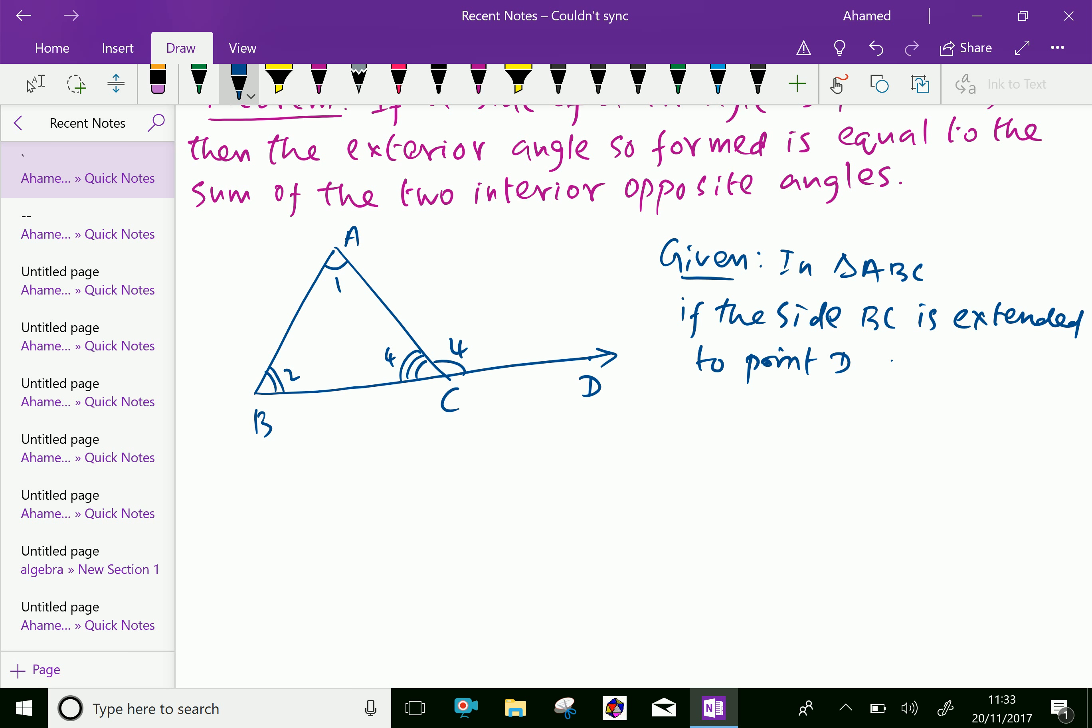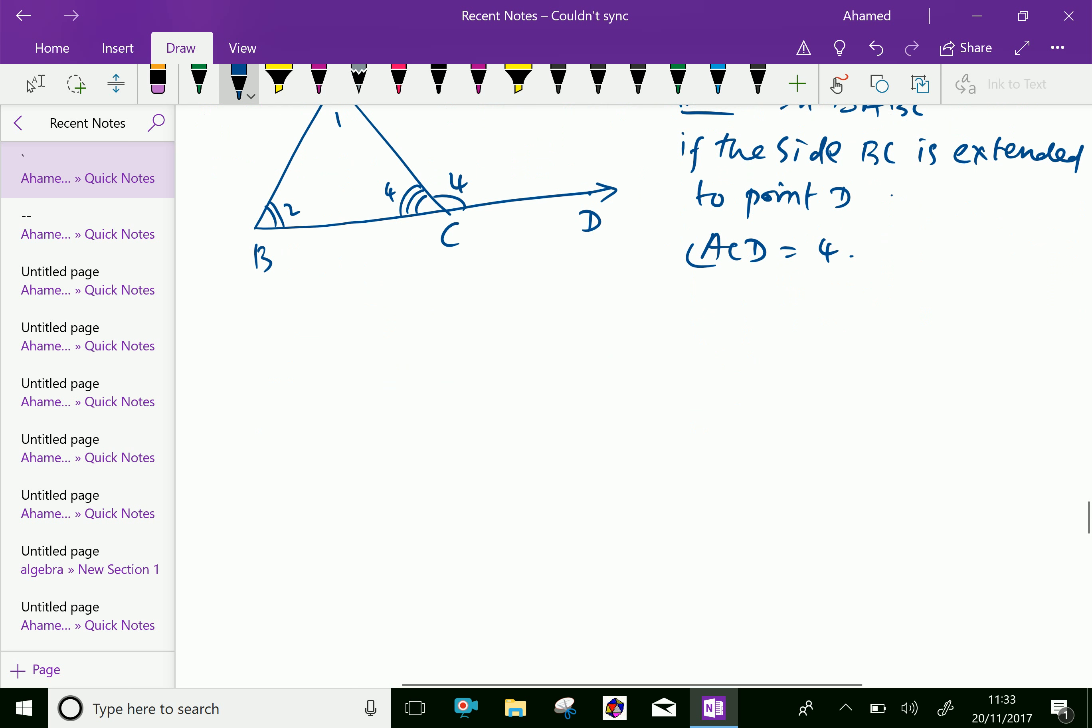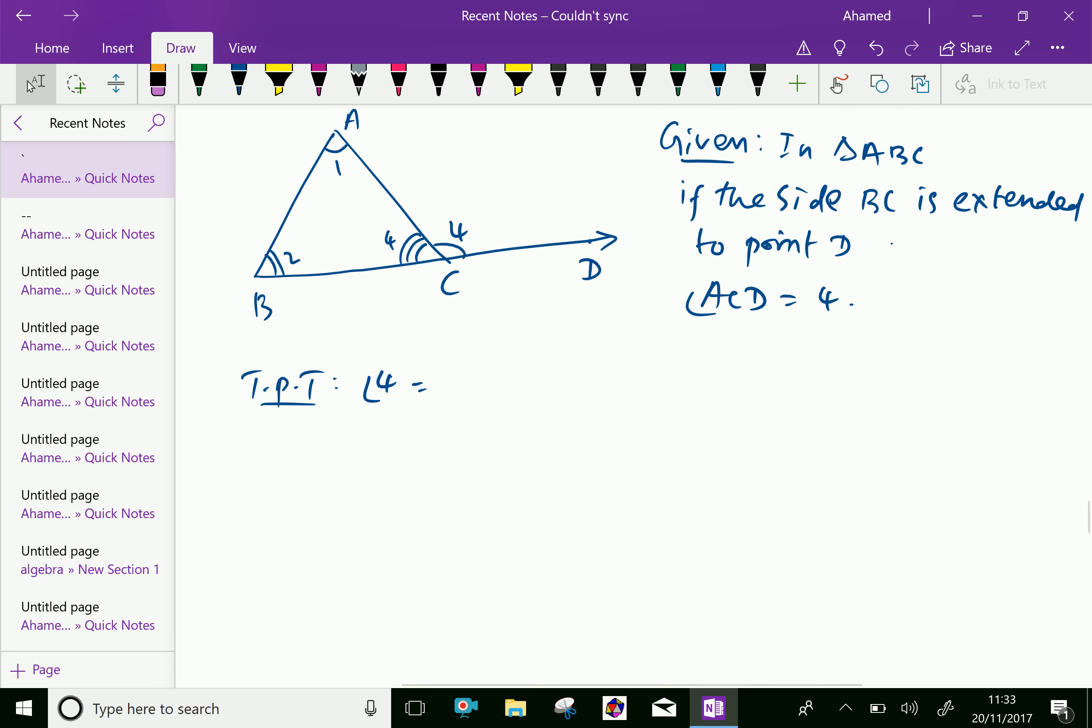Therefore, angle ACD is angle 4. Now, to prove that angle 4, the exterior angle after extension, is equal to the sum of opposite interior angles, that is angle 1 plus angle 2. We have to prove this.